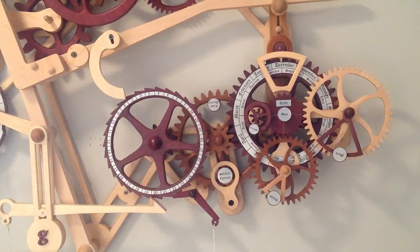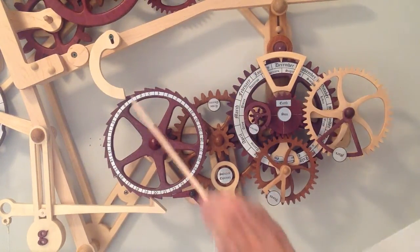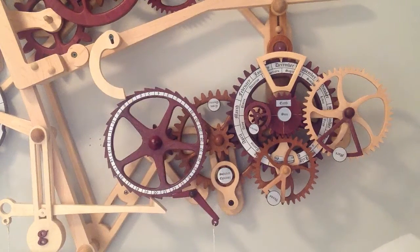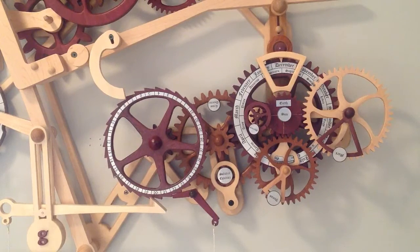This changes the end of the month advance arm, which changes the adjustment arm, which engages the advance pin on this wheel. That allows the wheel to be pushed forward one or two extra days.